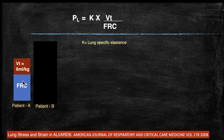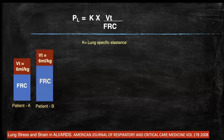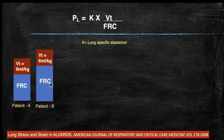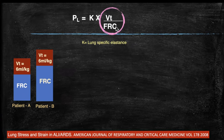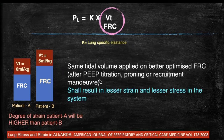In Patient B, the same tidal volume is used but recruitment maneuvers, PEEP titration, or proning have opened up alveoli and improved FRC. Since strain = VT / FRC, increasing the FRC (the denominator) through recruitment reduces strain. When strain is reduced, stress also reduces. So for the same tidal volume, by performing good recruitment and improving FRC, we can reduce the strain and stress on the system.